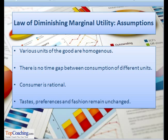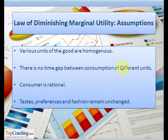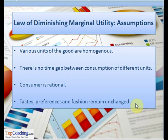The applicability of the law of diminishing marginal utility also requires certain assumptions. First, the various units of the good are homogeneous in nature. Second, there is no time gap between the consumption of different units of the commodity. Third, the consumer is a rational being. And fourth, tastes, preferences, and fashion remain unchanged.